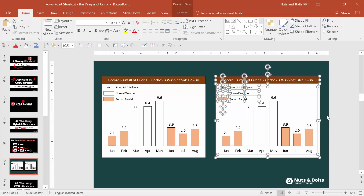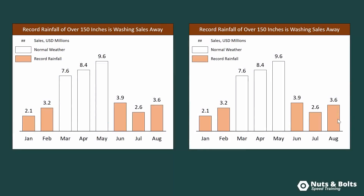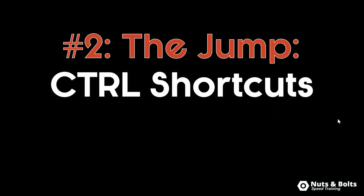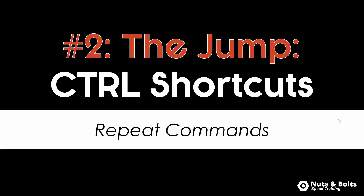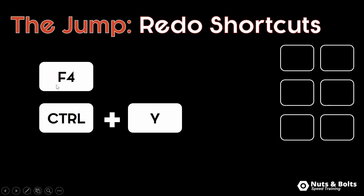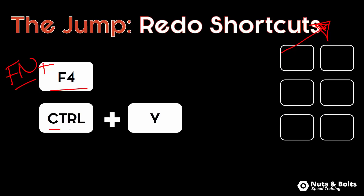So that is the drag of the drag and jump. Now let's talk about the jump part, which you do using your control shortcuts — it's called the repeat command. There are really two keyboard shortcuts here: you have F4, just a straight up F4, and if you have your function keys inverse, you might need to hit Fn plus F4. You can also just hit control Y. Both of these are the redo or repeat keyboard shortcuts.